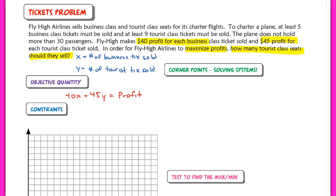Now let's list our constraints. To charter the plane, at least five business class tickets must be sold. So X must be greater than or equal to five. At least nine tourist class tickets must be sold as well. So Y must be greater than or equal to nine.